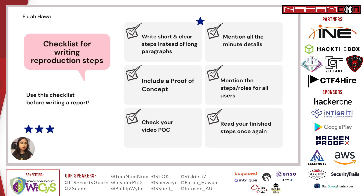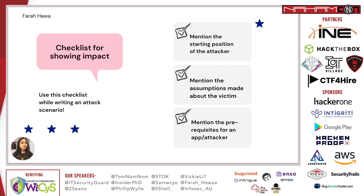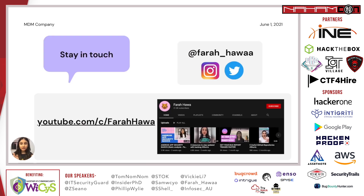Here's a quick checklist before you write a report. For reproduction steps: write short and clear steps instead of long paragraphs; include a simple proof of concept; if using a video POC, make it efficient; mention any and all minor details; and separate steps and roles for each user if multiple users are involved. Always re-read your finished steps to check for errors. For showing impact: mention the attacker's starting position, assumptions about the victim, and any prerequisites for the app or attacker.